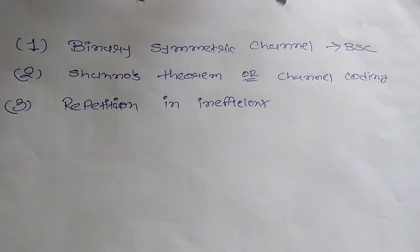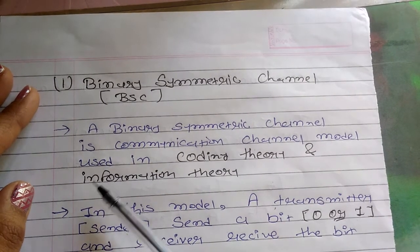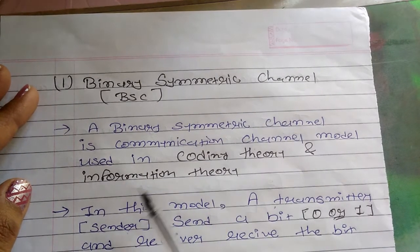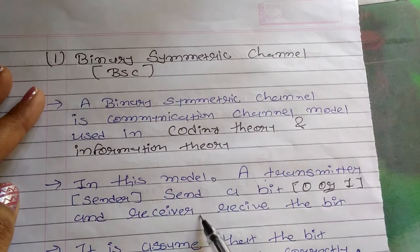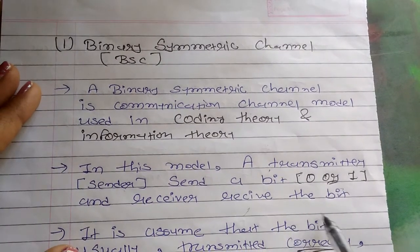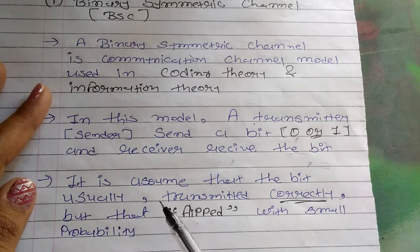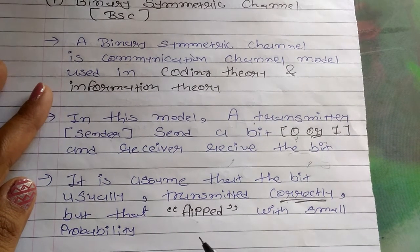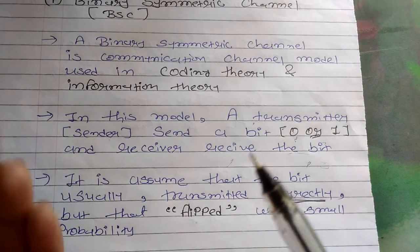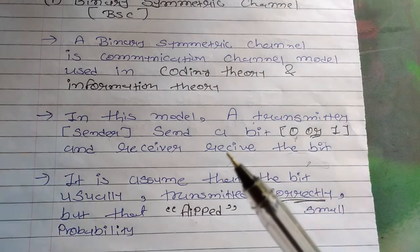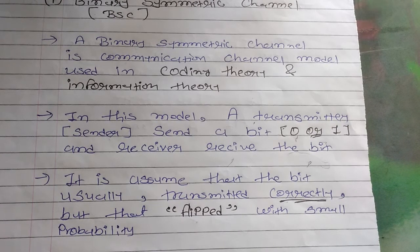Let's talk about the binary symmetric channel. It is a communication model used in coding theory and information theory. In this model, a transmitter — or sender — sends a bit, zero or one, and the receiver receives the bit. It is assumed that the bit is usually transmitted correctly, but may be flipped with a small probability. Whatever you have — octal, hexadecimal — it is just a format of zeros and ones.